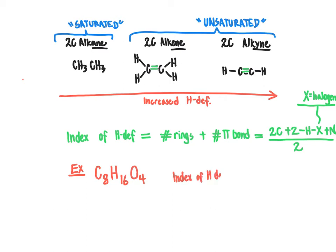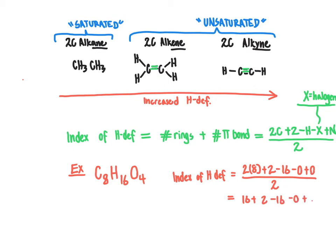Let's calculate the index of hydrogen deficiency for C8H16O4. Using the formula: two times eight carbons, plus two, minus 16 hydrogens, minus zero halogens, plus zero nitrogens, all divided by two. Note that oxygen does not come into this equation because it doesn't directly impact hydrogen deficiency. Crunching the numbers, the 16s cancel out and we get two divided by two, so the index of hydrogen deficiency is one. This number one tells you the molecule must have exactly one ring or pi bond — not more, not less.